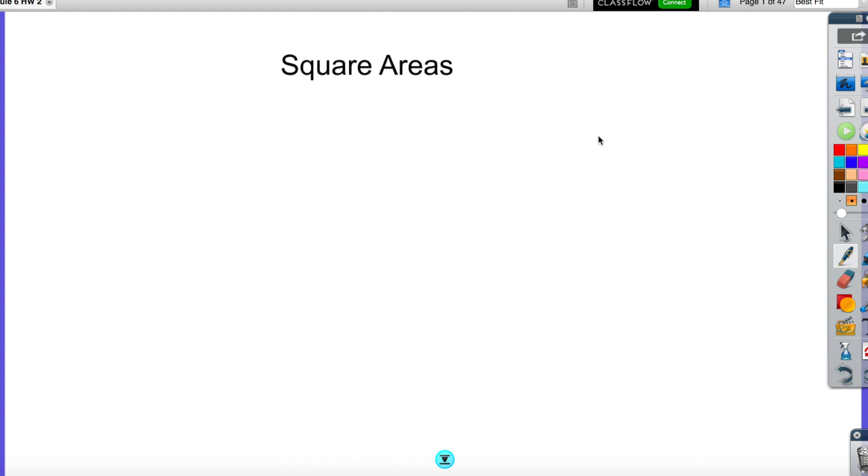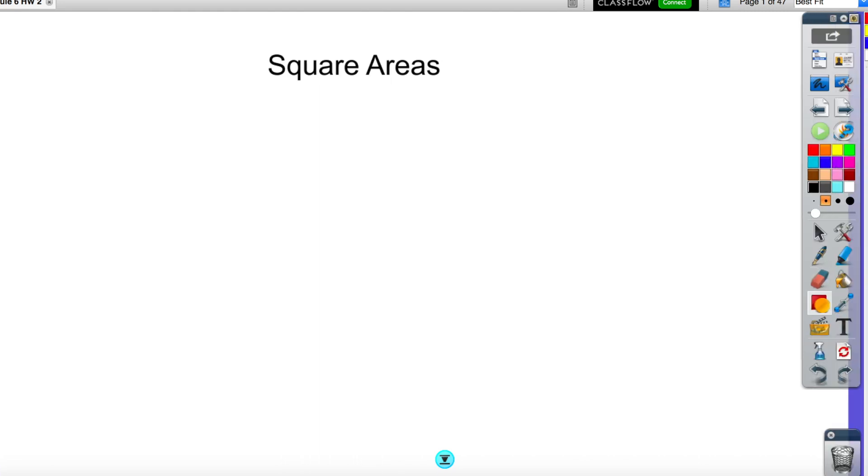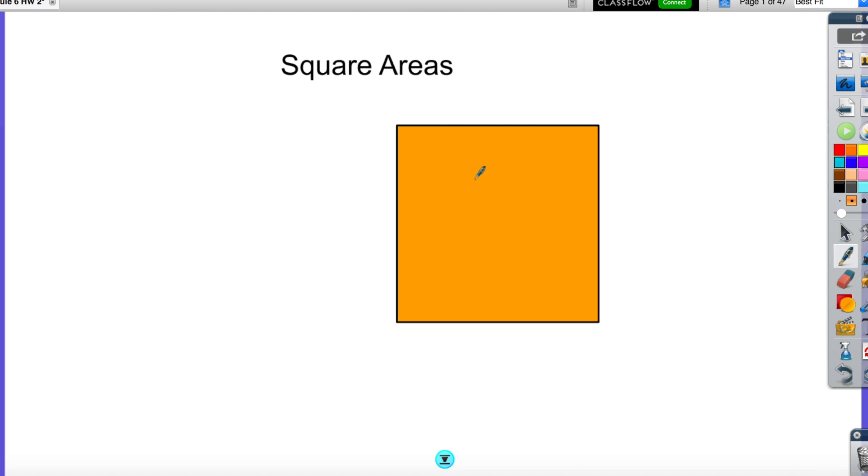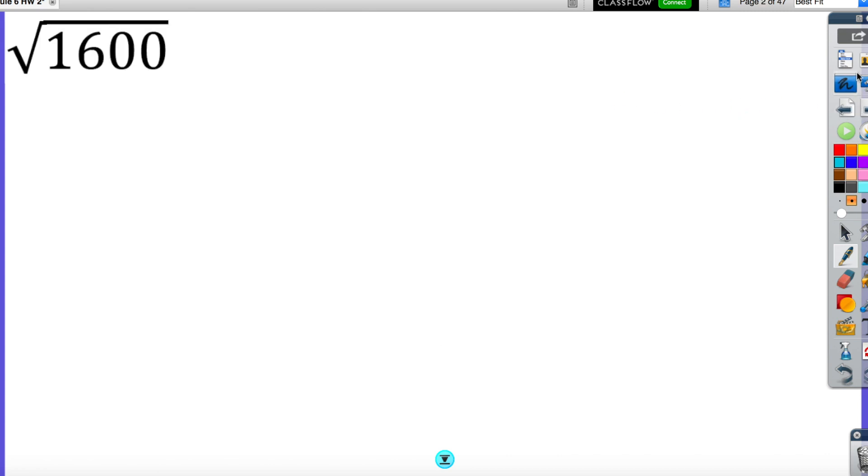Hey guys, today we're going to be looking at square roots. Essentially, we are going to be given an area of a square and what we're going to do is try to find the side length. For instance, if the area of a square is 100, in order to find the side length, we take what we call the square root. We need to find two numbers that are exactly the same that multiply to 100, which is 10. Therefore, each side length is 10, because 10 times 10 is 100. Let's look at more examples with bigger numbers.